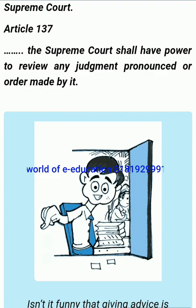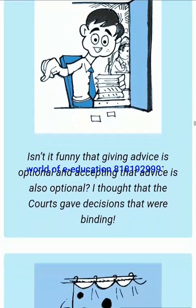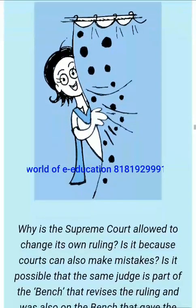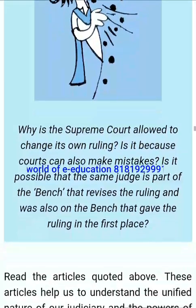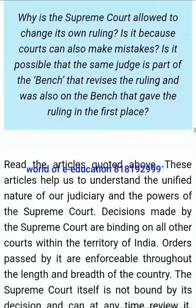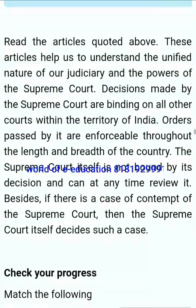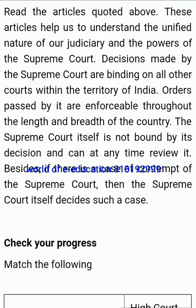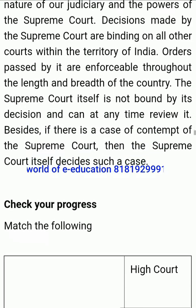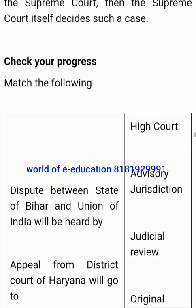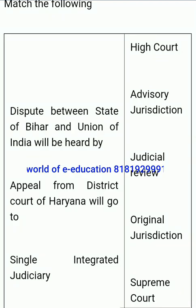Article 144 states that all authorities, civil and judicial, in the territory of India shall act in aid of the Supreme Court. Article 137 states that the Supreme Court shall have power to review any judgment pronounced or order made by it. Decisions made by the Supreme Court are binding on all other courts within the territory of India. Orders passed by it are enforceable throughout the length and breadth of the country. The Supreme Court itself is not bound by its own decisions and can at any time review them.